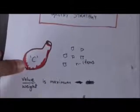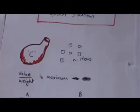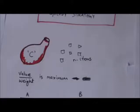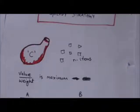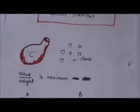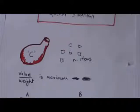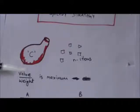Fractional knapsack is an optimization problem solved by greedy strategy. In greedy strategy we choose the option which is best at that moment. So in fractional knapsack, to maximize the value in the knapsack, we will first put that item whose value per weight is maximum.